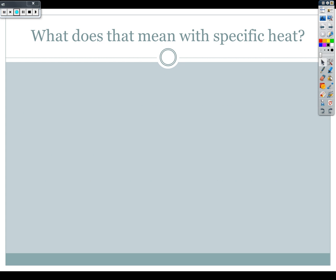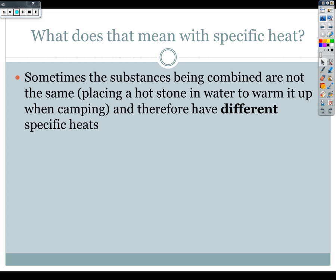And so what does that mean, or what does that have to do with specific heat? Sometimes the substances being combined are not going to be the same, like placing a hot stone in water to warm it up when camping. And therefore, they're going to have different specific heats.